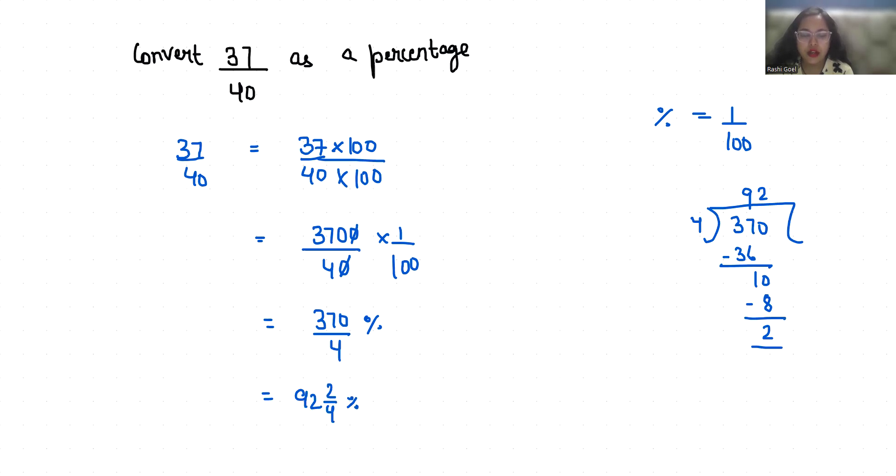So 92 whole 1 by 2 percent. 37 by 40 is 92 whole 1 by 2 percent.